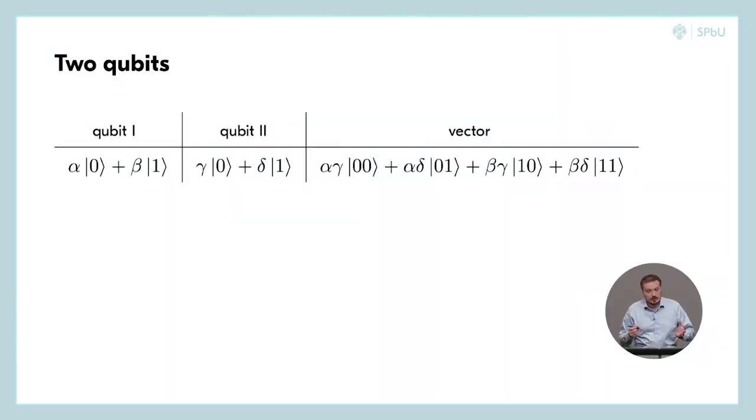Now, let's consider a more complicated situation when both qubits are in some superposition. And we still can describe this state in our newly constructed space like this. And it's easy to show that the sum of squares of all the coefficients here gives us 1. So it is again a unitary vector.